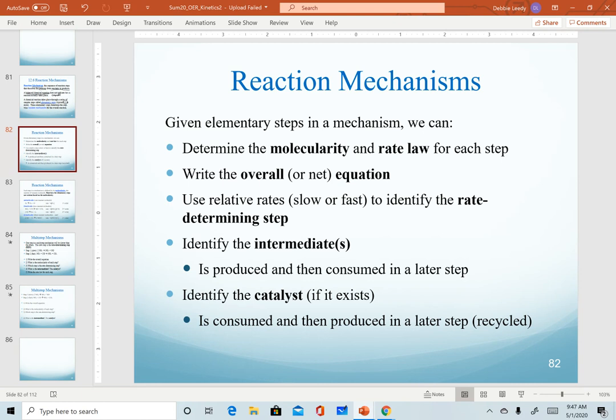The terms that we'll be defining as we discuss mechanisms are the molecularity of a step. On the next slide, we'll work through an example and describe the definition of molecularity. In our next video, we'll get into rate laws. We won't discuss it in this video, but in the next one we'll discuss rate laws and how we determine those for elementary steps. We'll look at an example of how we write the overall or net equation for a mechanism. We will define the rate determining step, intermediates, and catalysts as well. Their definitions are included here for reference, but as we go through an example, we'll define them again.